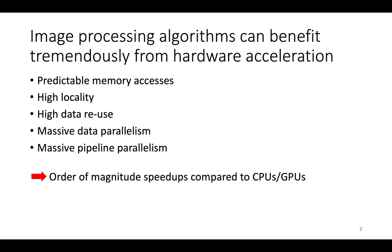Image processing algorithms, if you look at their properties, they're basically an algorithm designer's wish list and a hardware designer's wish list. They've got very predictable memory accesses, very high locality, high data reuse, massive data parallelism, and massive pipeline parallelism. The result of that is that you can get order-of-magnitude speedups compared to CPU and GPU implementations by implementing custom hardware for these algorithms.